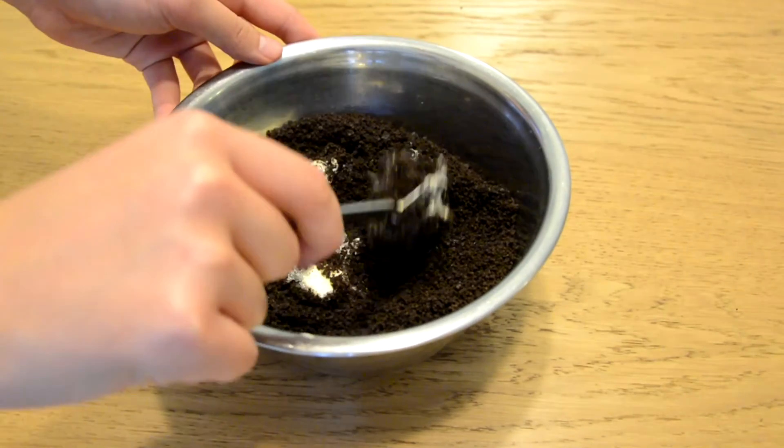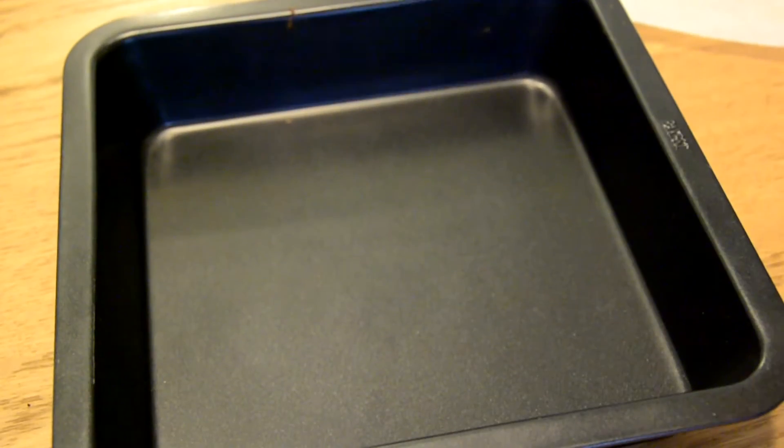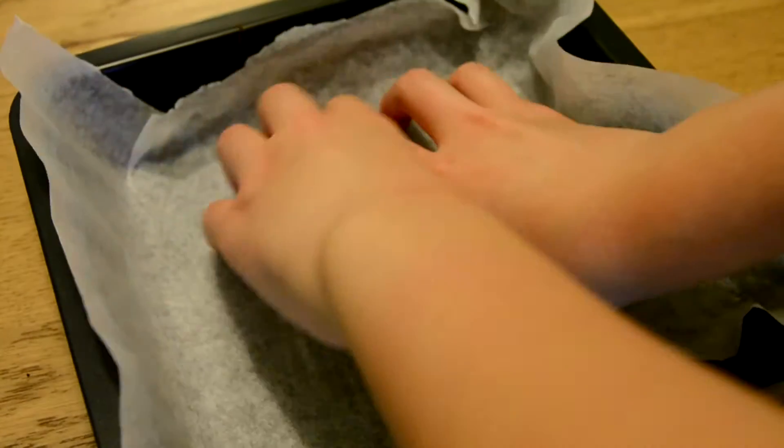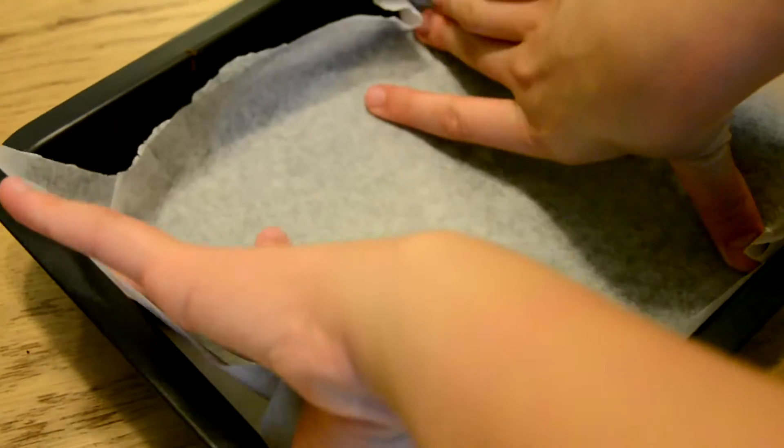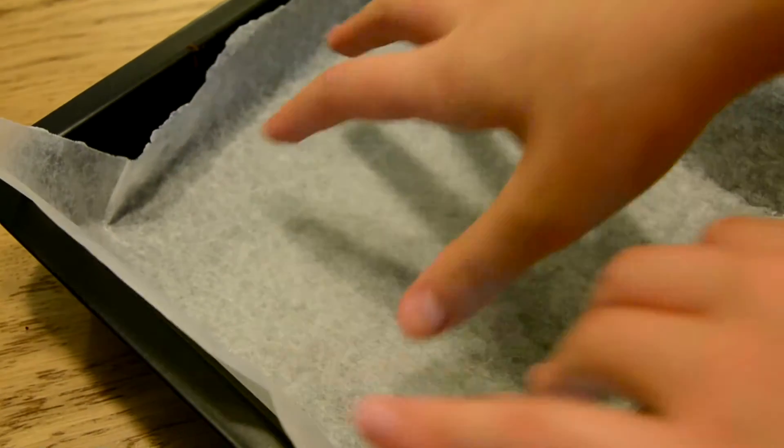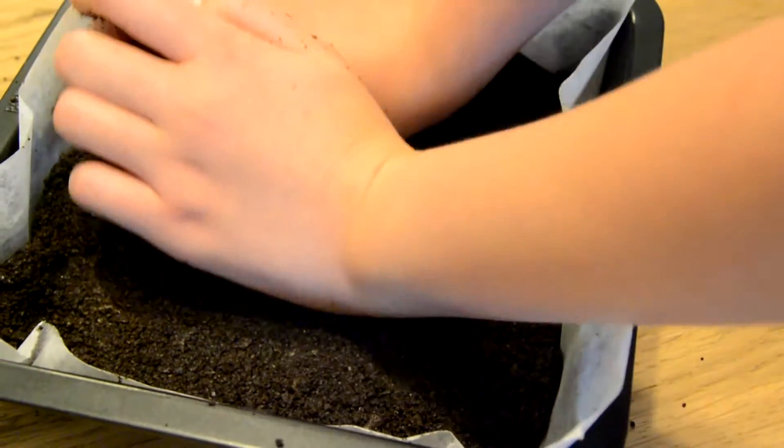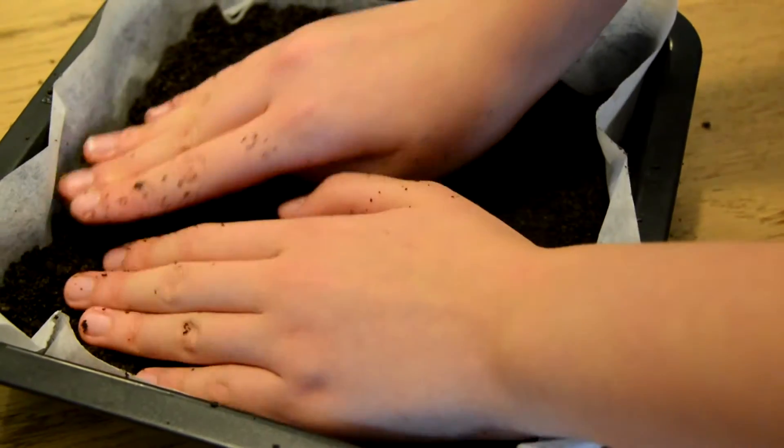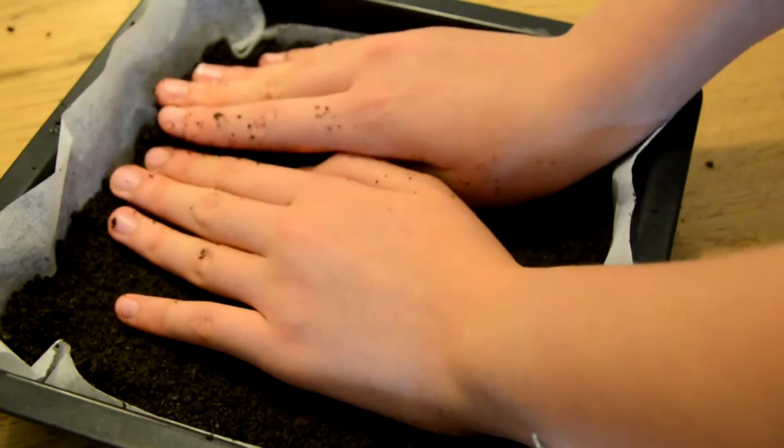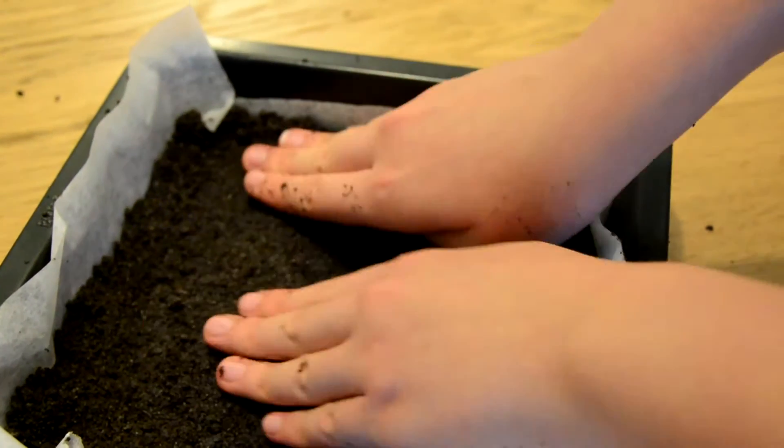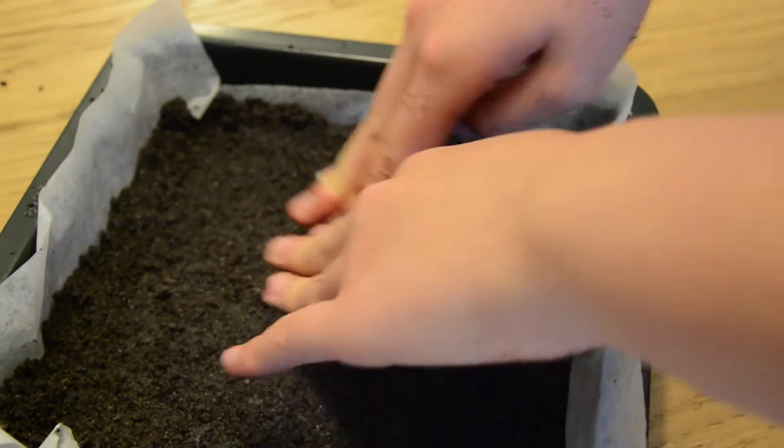Then you want to line your baking pan with some parchment paper, so it'll be easier for you to get out your Oreo bars later on. Pour in your Oreo mixture into the pan and start pressing it against the sides. Make sure it's all even.